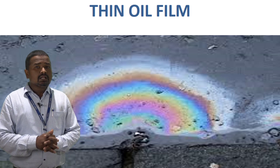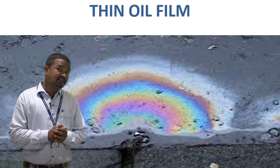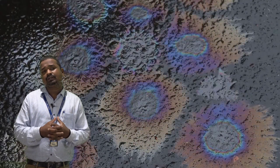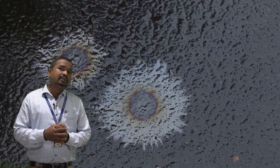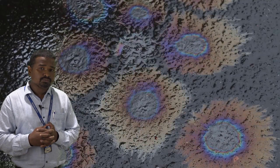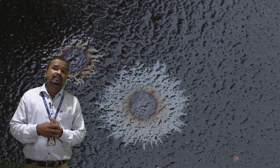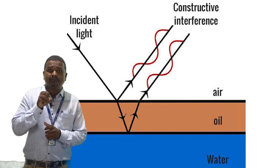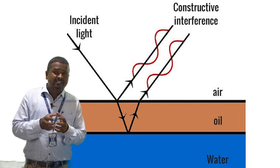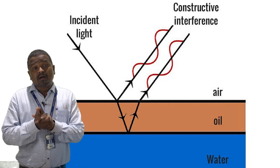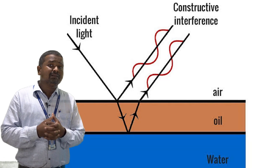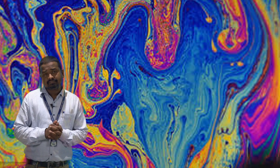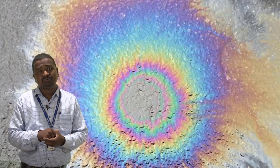The next example is the colorful patch on a wet road after rain. When it is raining and we are walking on the road, we see colorful patches on the wet road. This is because of the thin oil film deposited on the wet road. When sunlight falls on that oil film and reflects from its top and bottom surfaces, the wavelengths attending constructive interference are visible, and the remaining are absent. These are some beautiful examples of interference in nature.